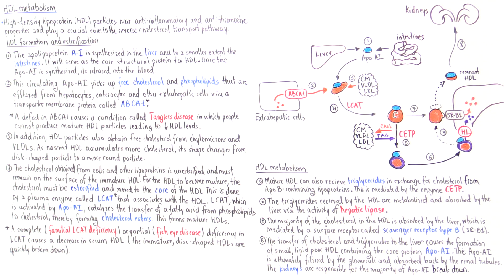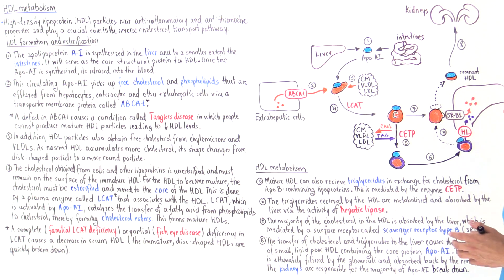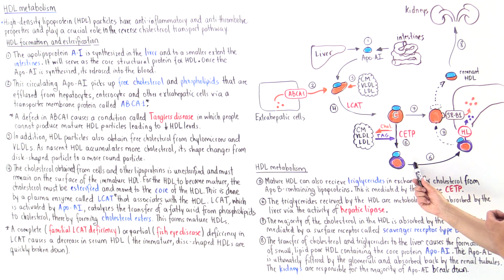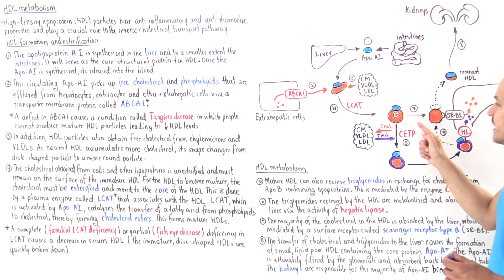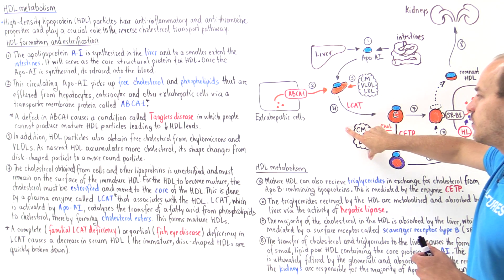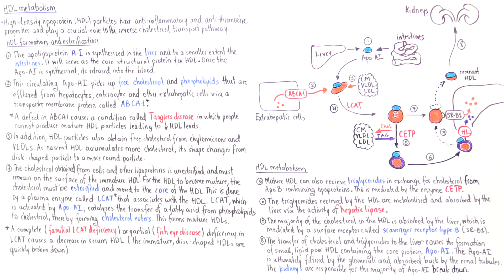Once we form mature HDL particles, they can do two things. HDL particles can either be taken up by the liver, or they can interact further with chylomicrons, VLDL, and LDL particles. An exchange takes place: the HDL particles take triglycerides from these particles and in exchange give cholesterol. The enzyme CETP catalyzes this transfer — the exchange between cholesterol and triglycerides between HDL and other apolipoprotein B-containing lipoproteins such as chylomicrons, VLDL, and LDL.